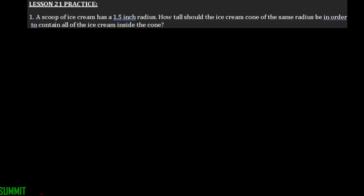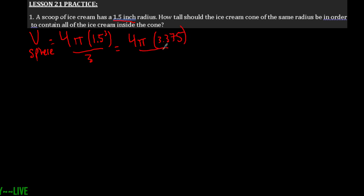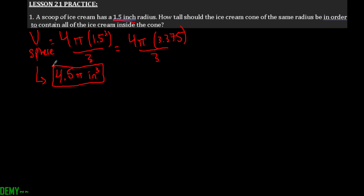Now for the practice problems. A scoop of ice cream has a 1.5 inch radius. We need to find the volume of that sphere: four times pi times 1.5 cubed over three equals four pi times 3.375 over three. The volume of the ice cream scoop is 4.5 pi cubic inches.